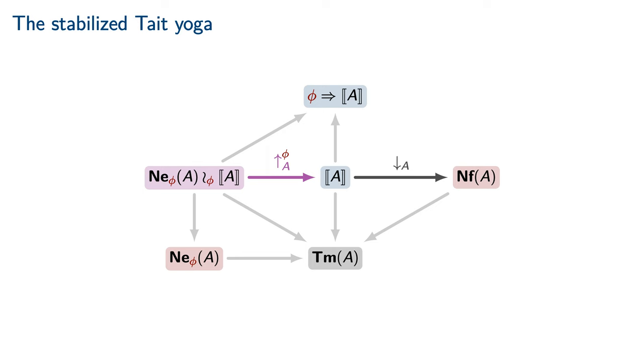With our new notion of stabilized neutral in hand, it is now possible to refine the standard Tait yoga to the cubical setting. In addition to the existing compatibility condition that the underlying equivalence class of type terms is preserved by the reflection map, we must add an additional compatibility condition.